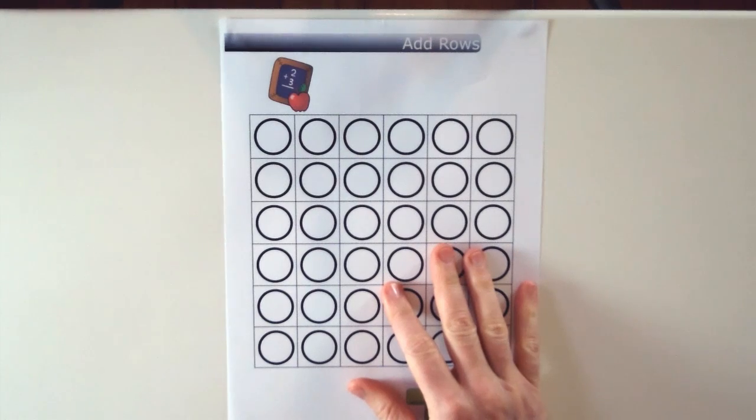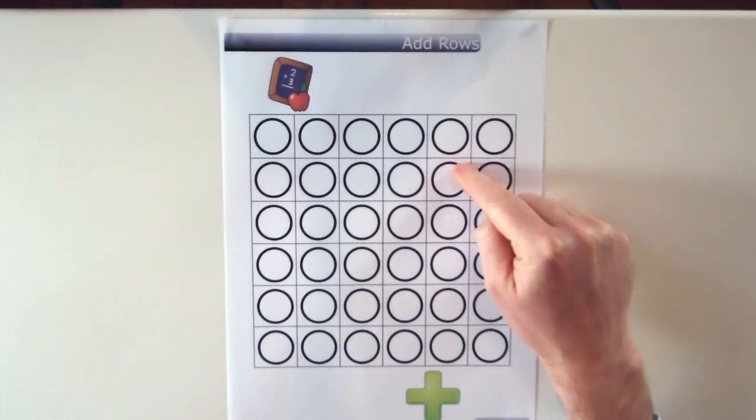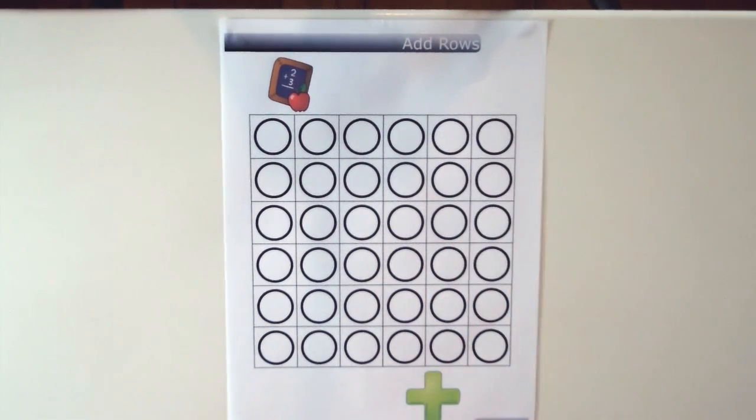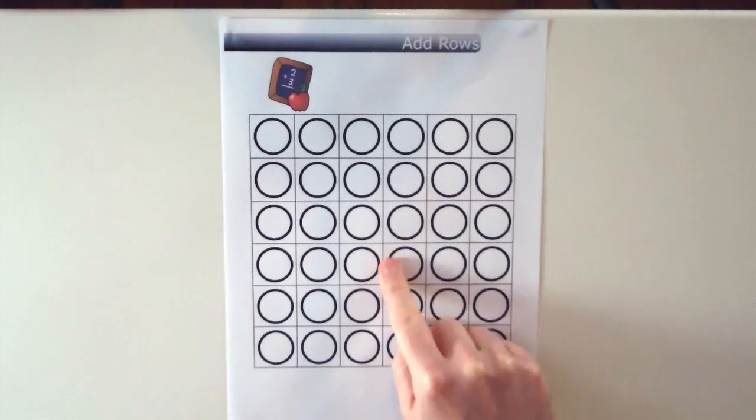Now the aim of the game for Add Rows is to circle as many combinations of numbers that equal the target number that you can. And the winner is going to be the player who's circled the most.